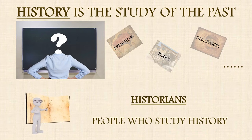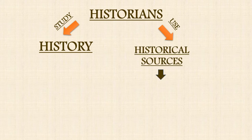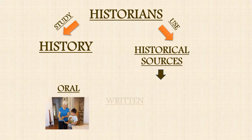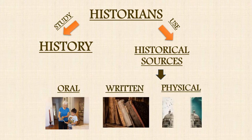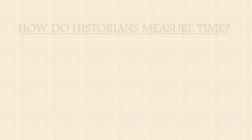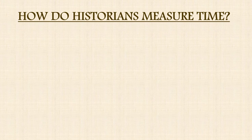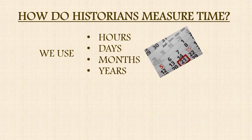Historians are people who study history. Historians study history and they use historical sources, for example oral sources like a tale, writing sources like a book, physical sources like a cathedral, or visual sources like a picture.